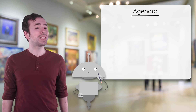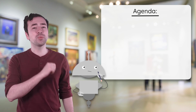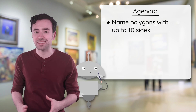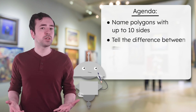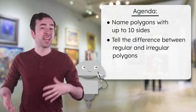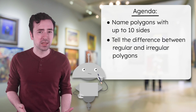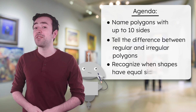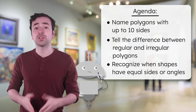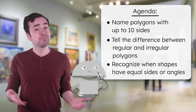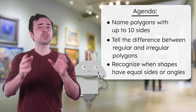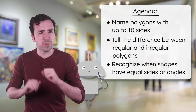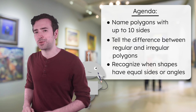By the end of today's lesson, you'll be able to name polygons with up to 10 sides, tell the difference between regular and irregular polygons, and recognize when shapes have equal sides or angles. Have your guided notes ready, and let's explore the math that will shape our masterpiece.